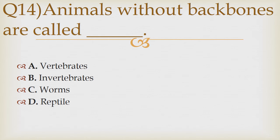Question number 14. Animals without backbones are called ___. Option A: Vertebrates. Option B: Invertebrates. Option C: Worms. Option D: Reptiles. The correct answer is Option B — Invertebrates.